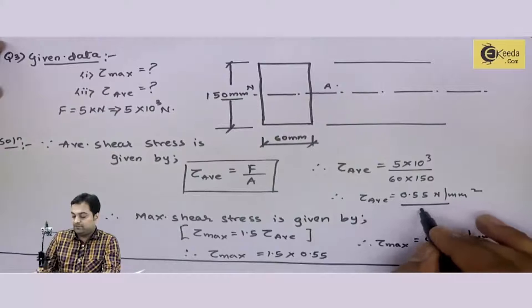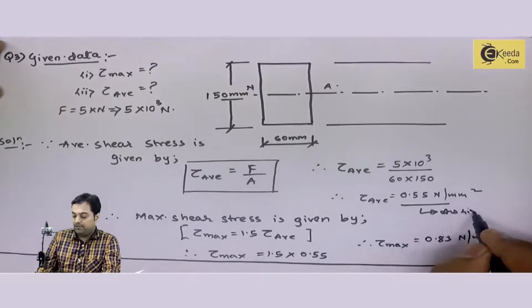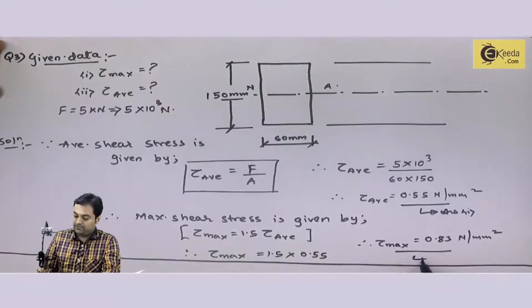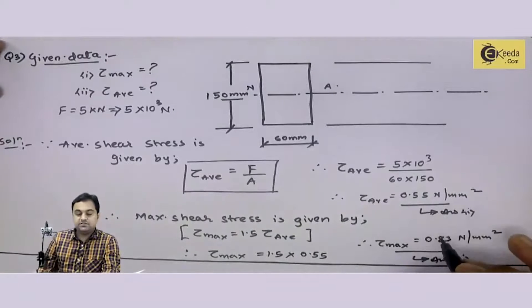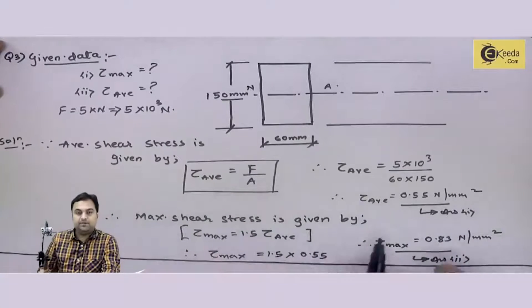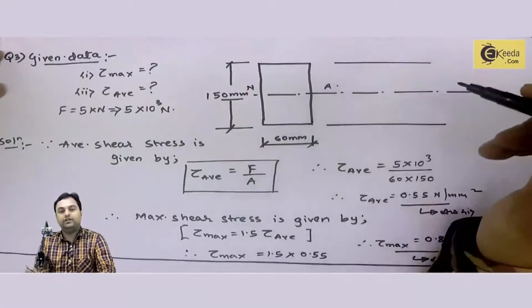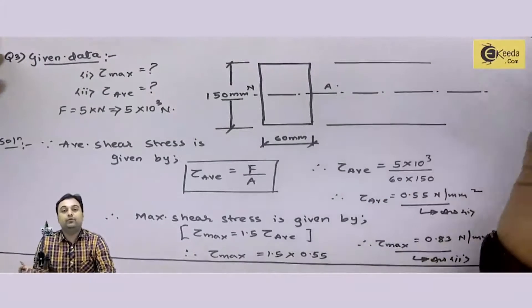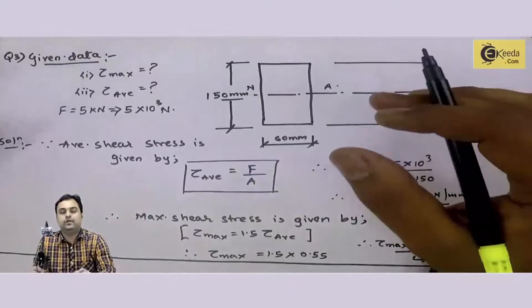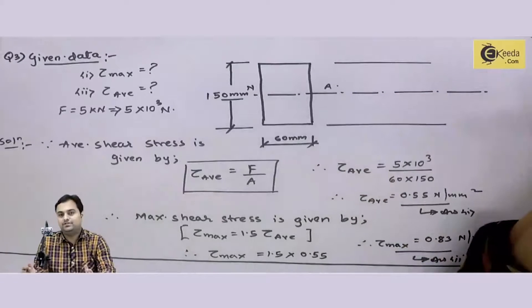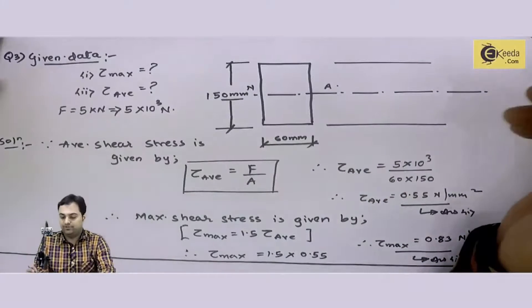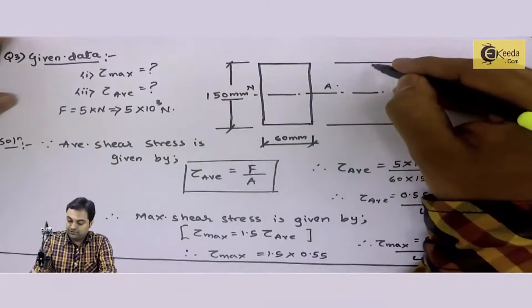So this is my first answer, tau average. My second answer, tau max. With both these, the problem has been completed. Now we will draw the shear stress distribution. It was not asked in this question, but it is always better to highlight your answer with some conclusion. So here we will show the shear stress distribution.